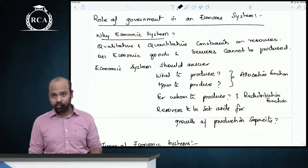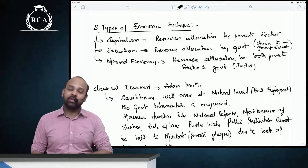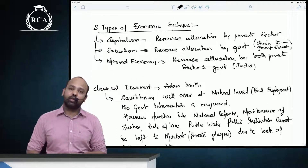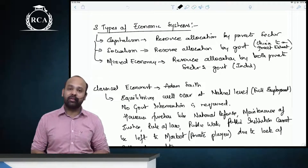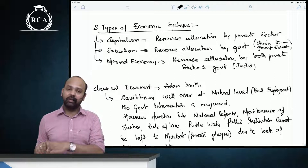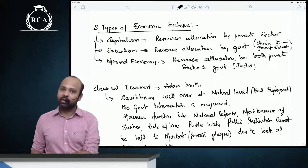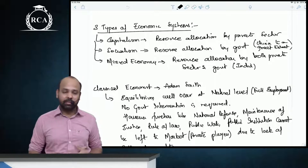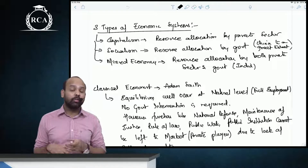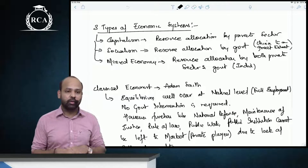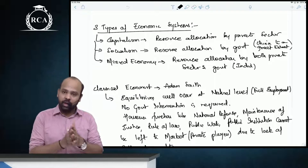There are three types of economic systems. First is capitalism, where resource allocation is done by private players through the free market. Second is socialism, where resource allocation is done by the government. Third is mixed economy, where resource allocation is undertaken by both private players as well as the government.